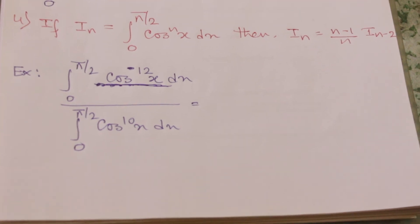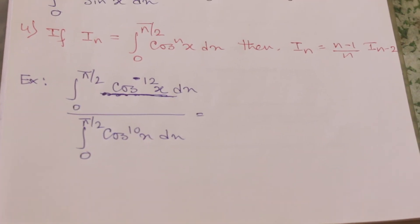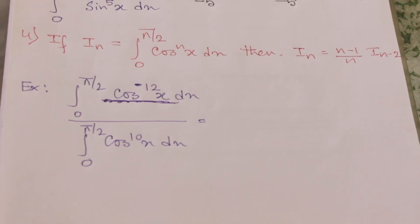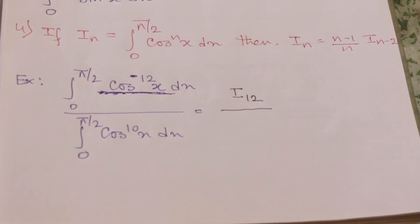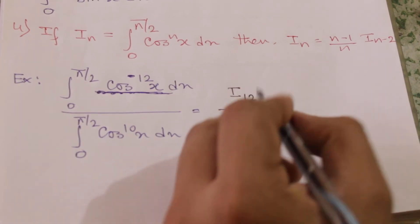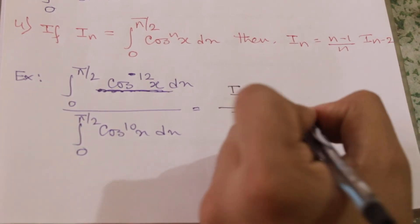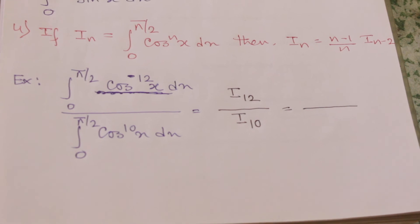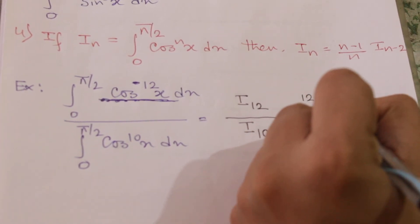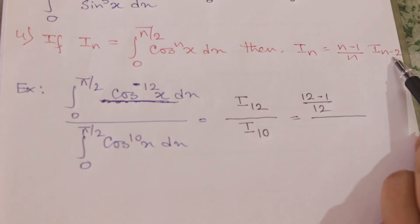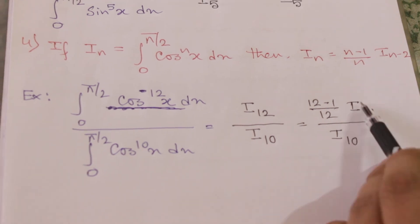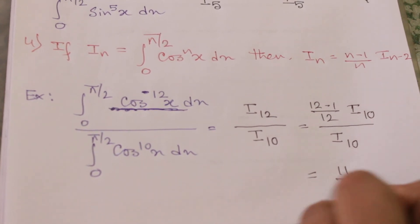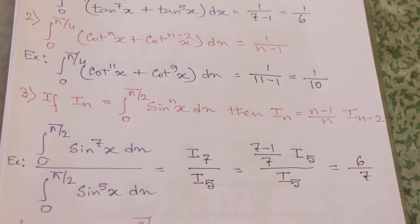Example: [integral from 0 to π/2 of cos^12(x) dx] divided by [integral from 0 to π/2 of cos^10(x) dx]. This equals I_12 / I_10. Using the formula with n = 12: I_12 = (12-1)/12 · I_10 = 11/12 · I_10. The I_10 terms cancel, giving a final answer of 11/12. These are very important shortcuts for competitive exams.